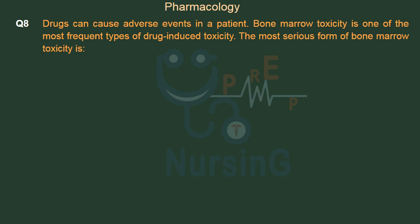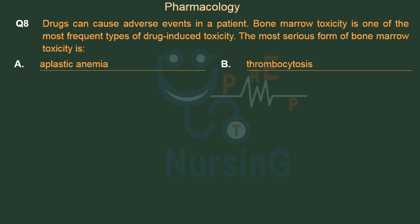Drugs can cause adverse events in a patient. Bone marrow toxicity is one of the most frequent types of drug-induced toxicity. The most serious form of bone marrow toxicity is: Option A: Aplastic anemia. Option B: Thrombocytosis. Option C: Leukocytosis. Option D: Granulocytosis. The right answer is Option A: Aplastic anemia.